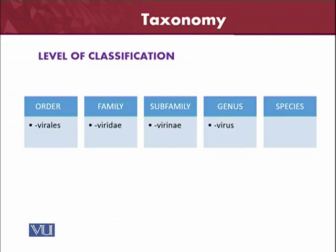The different levels of classification provided by the ICTV system are: order, family, sub-family, genus, and species. It is clear from the name suffix: if the name ends in '-virales' it is the order of the virus; if the name ends in '-viridae' it is the family; sub-family ends in '-virinae'; and the genus ends in '-virus'.